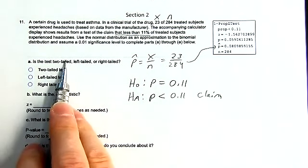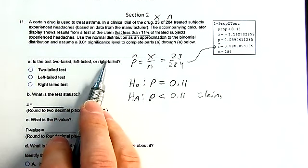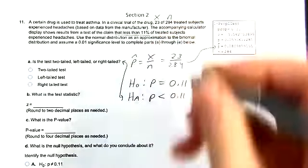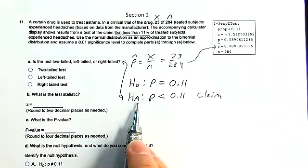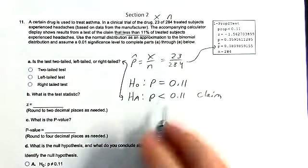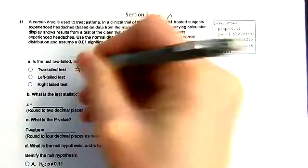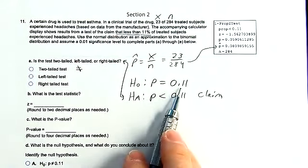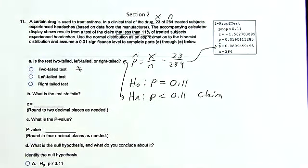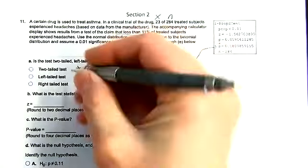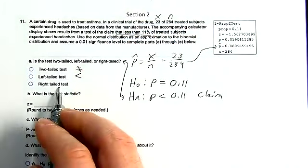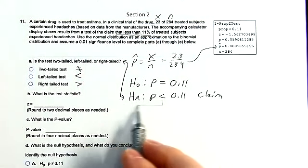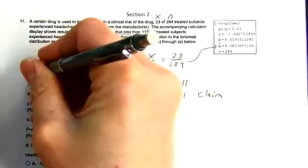The first question is: is the test two-tailed, left-tailed, or right-tailed? This is always related to the alternative hypothesis. A two-tailed test uses the not-equal-to sign. A left-tailed test uses the less-than sign. A right-tailed test uses the greater-than sign. They use less than, so it has to be a left-tailed test.